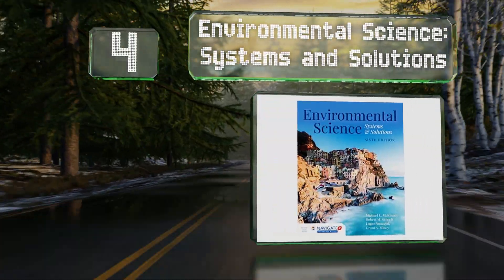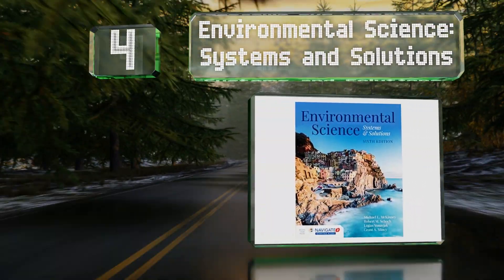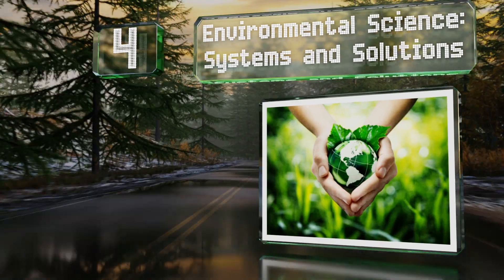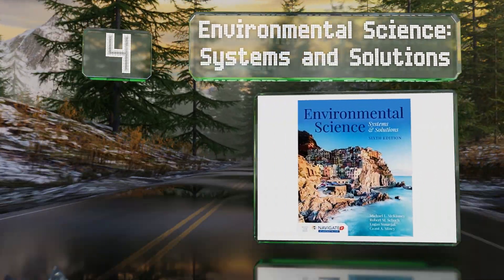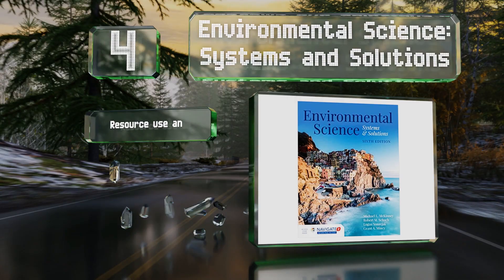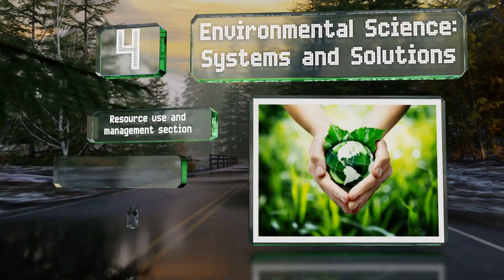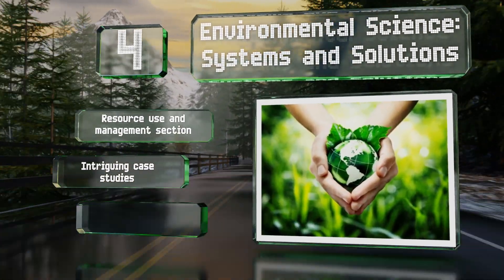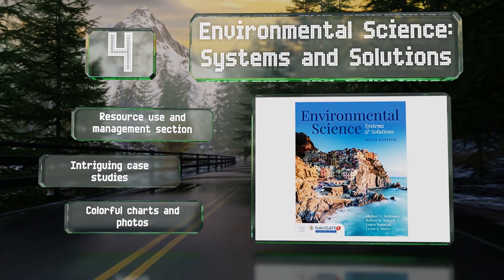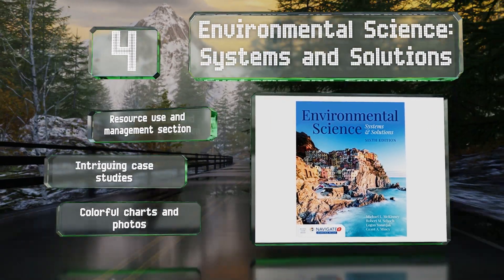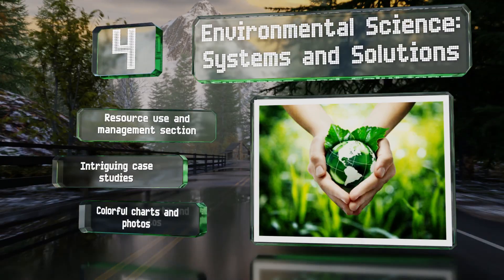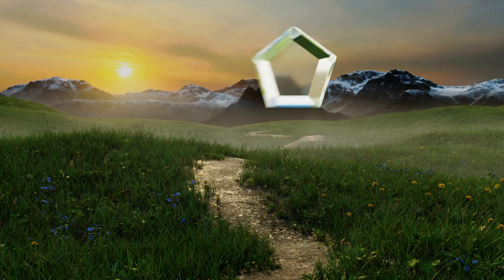At number 4, with an eye toward examining the big picture, 'Systems and Solutions' offers a potent starting point for students. The authors show how various facets of the subject fit together, from the historical to the political, with strong evidence-based information. It features a section on the use and management of resources, intriguing case studies, and colorful charts and photos.